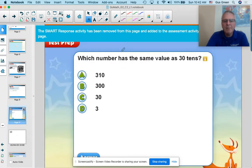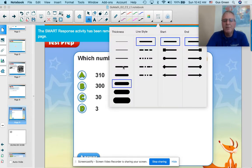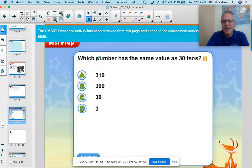Okay, for our test prep, it's which number has the same value as 30 tens. And again, don't let them trick you. It's 30 tens. So you've got to draw 30 of them. 1, 2, 3, 4, 5, 6, 7, 8, 9, 10.